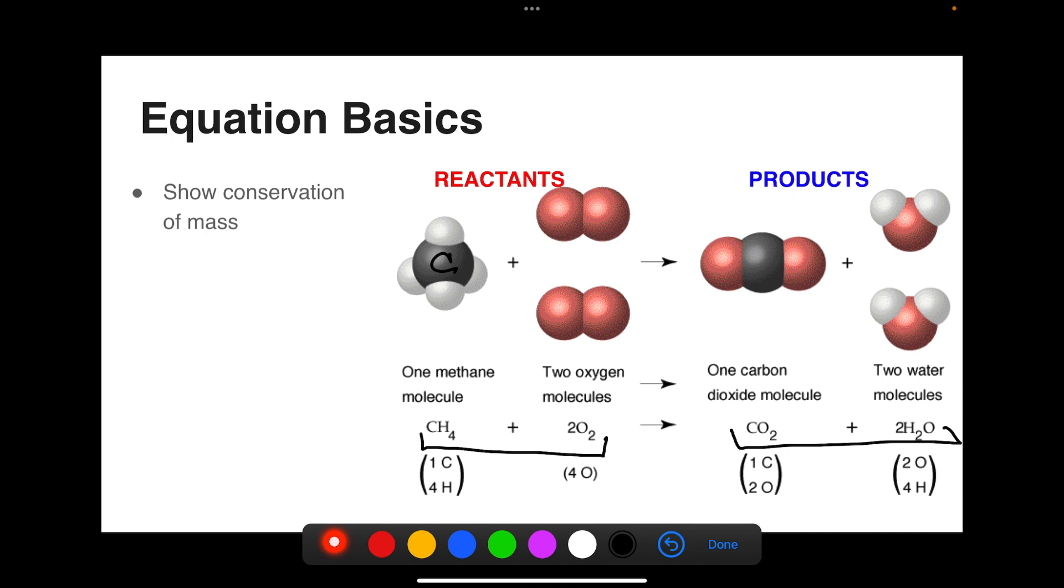Recall that chemical equations show conservation of mass. There's one carbon atom in the reactants and one in the products, four hydrogens in the reactants and four hydrogens in the products, and four oxygens in the reactants and four oxygens in the products. No matter is being created or destroyed.